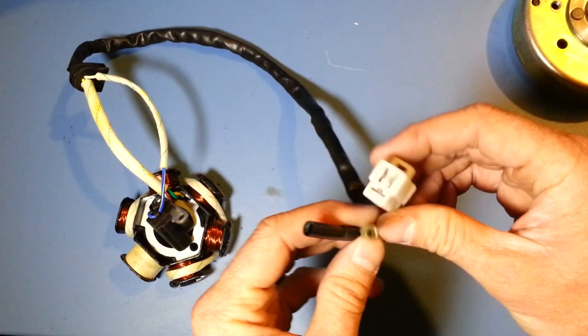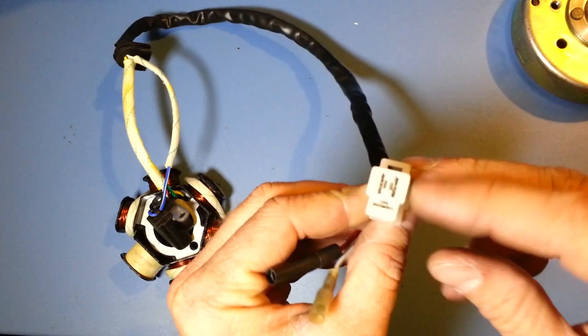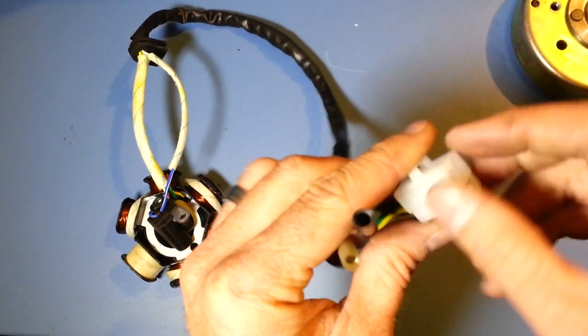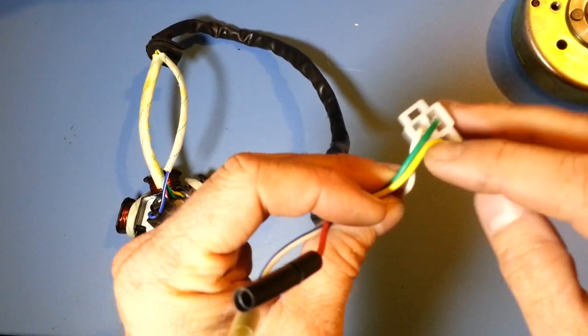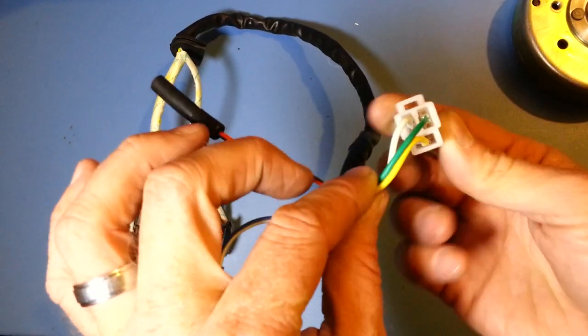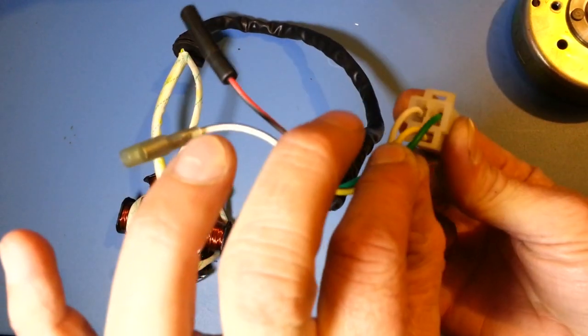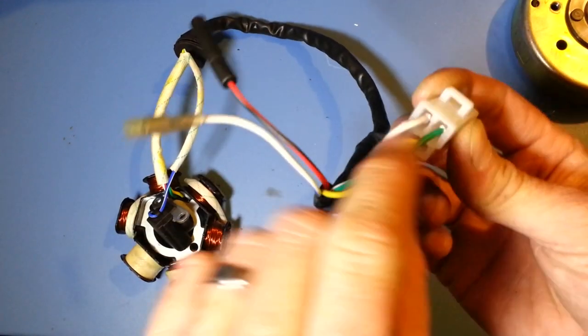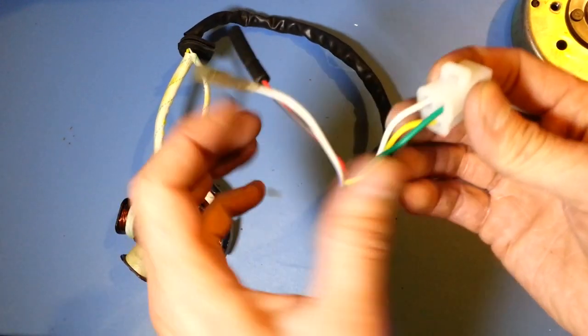Also on the Type A stator, there is a three-prong plug. Notice that there's three prongs. Some of these won't have the green wire in there. It'll be a three-prong just like this, but this green wire will be gone. This is a ground wire. It grounds itself internally, so it wouldn't be needed.